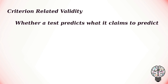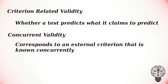The two major components of criterion-related validity are concurrent validity and predictive validity. Concurrent validity is the degree to which a test corresponds to an external criterion that is known concurrently, that is, occurring at the same time. For instance, a new IQ test or personality test might be compared with an older but similar test known to have good validity.